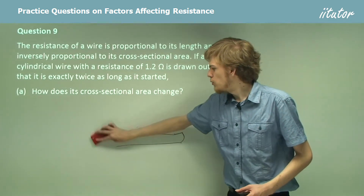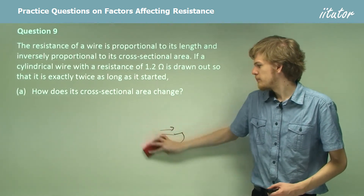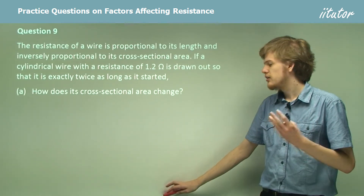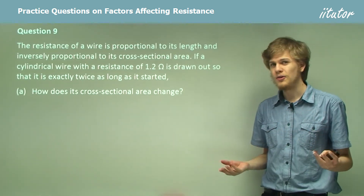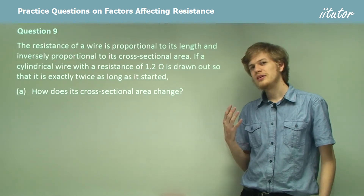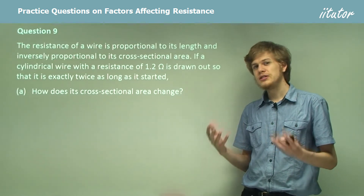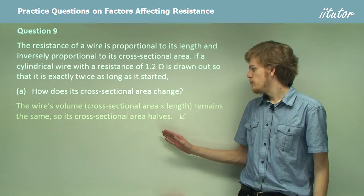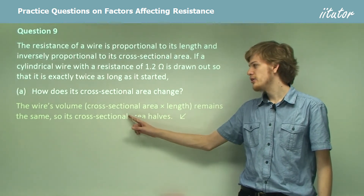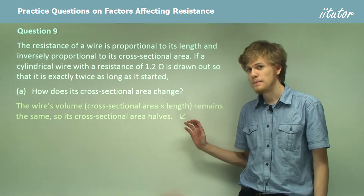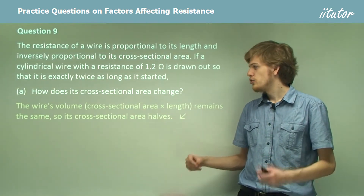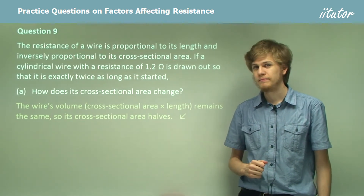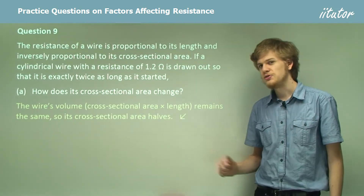How will its cross-sectional area — the area of the circular face — change after we draw it out? Using the volume of a cylinder: volume equals cross-sectional area times length, and it stays the same. So if we double the length, we have to halve the cross-sectional area. Fairly straightforward.